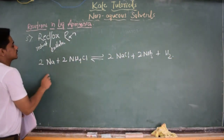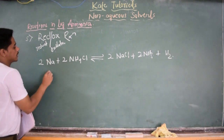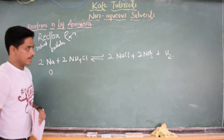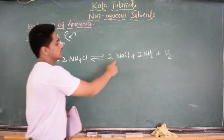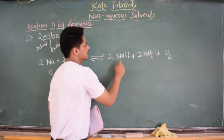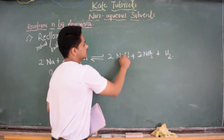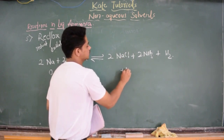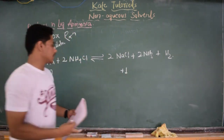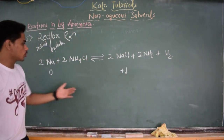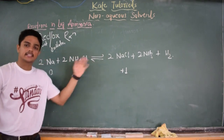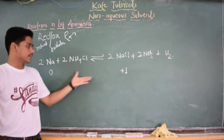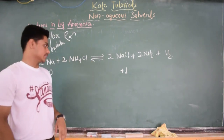Sodium — the oxidation state of sodium is 0 here, whereas the oxidation state of sodium in NaCl is +1. From 0 to +1, there is an increase in oxidation number. So it is oxidation.